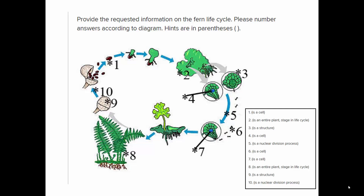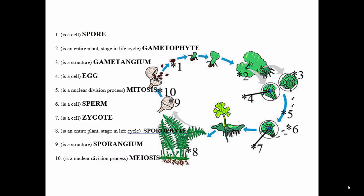The zygote is a single diploid cell that develops by mitosis to form number eight — a diploid sporophyte — which has structures called sporangia within which meiosis takes place. Number nine is the sporangium, and number ten is the process of meiosis. And here it is again, the same thing but just bigger.